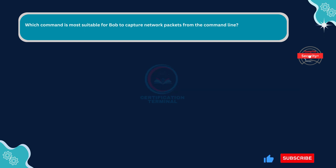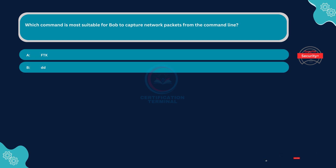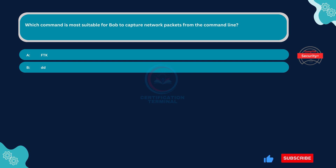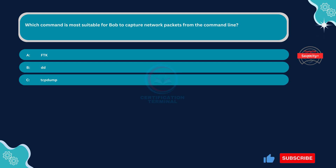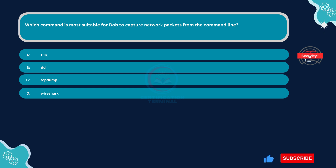Which command is most suitable for Bob to capture network packets from the command line? Option A: FDK. Option B: DD. Option C: TCP Dump. Option D: Wireshark. The correct answer is Option C: TCP Dump.